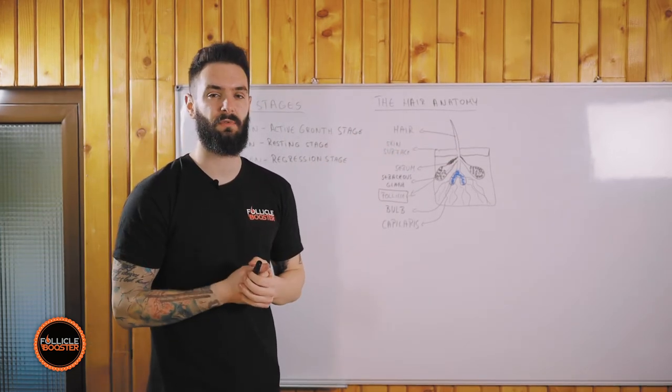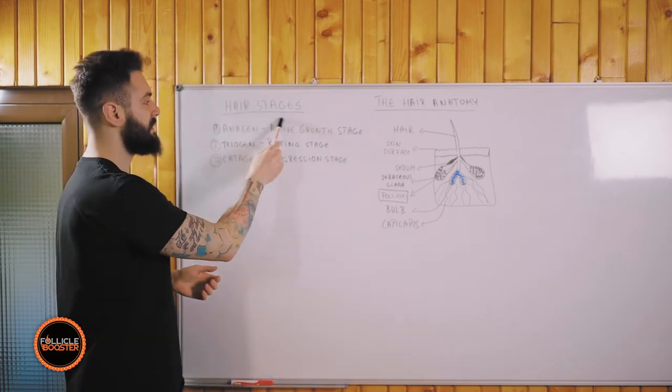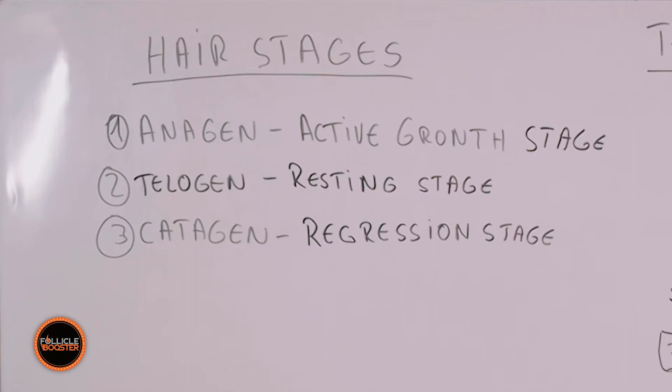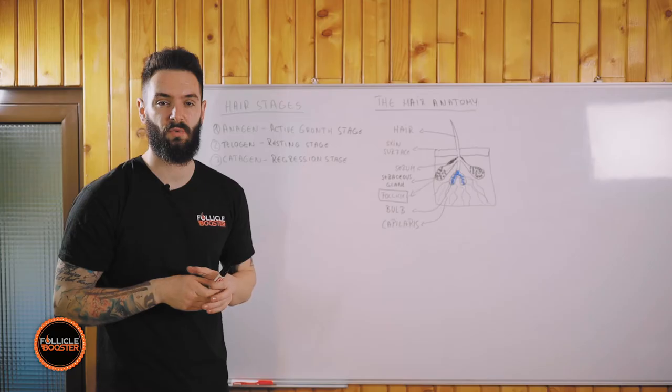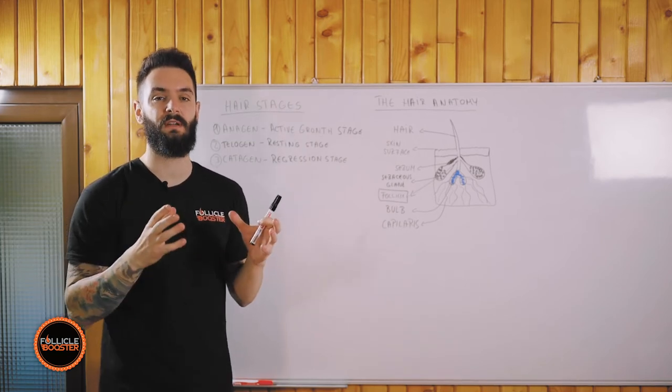After that we have the three stages in here, the hair growth stages that you need to understand and know. So the first one is the anagen part, the stage where the hair is on an active growth stage, when your hair is growing massively and receiving all the nutrients and everything for a healthy growth.